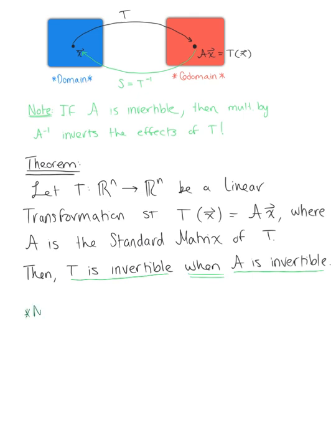We want to go ahead here and make one further note. In this case, the linear transformation s, which is our inverse of t, is defined by the function s of vector x equals the inverse of matrix A times vector x.